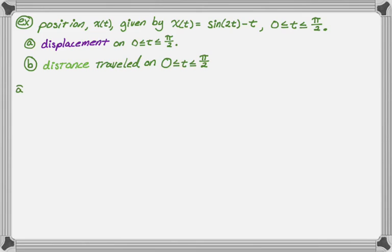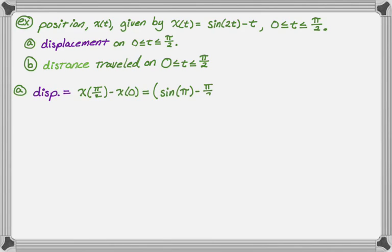Let's deal with displacement first. Displacement is where we stop minus where we started: x(π/2) minus x(0). Substituting into the position function — if you have a position function, displacement is super easy to find, it's just substitution. x(π/2) gives sine of 2·(π/2), which is sine of π, minus π/2. Then minus x(0), which gives sine of zero minus zero. Since sine of zero and sine of π are both zero, the whole thing simplifies to negative π/2. So our displacement is −π/2. Displacements are easier to find than distance traveled.